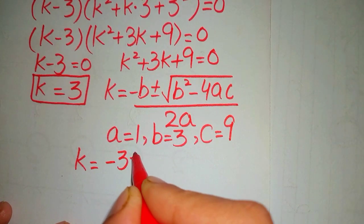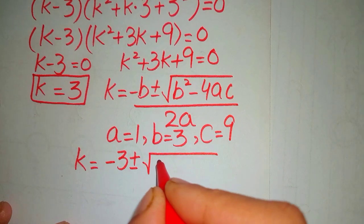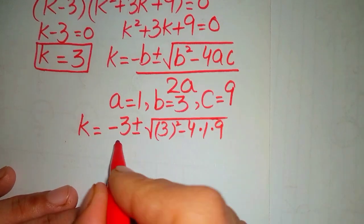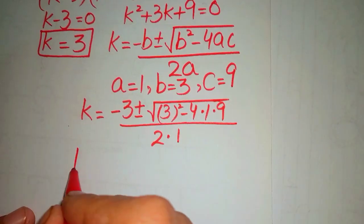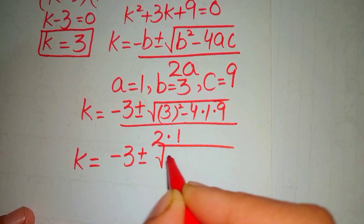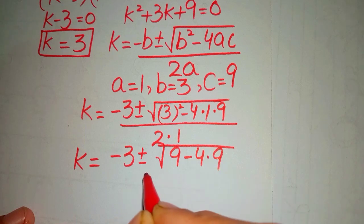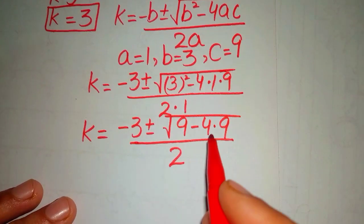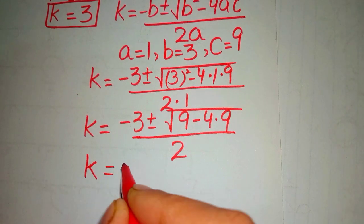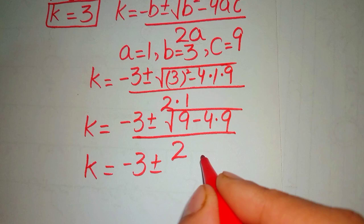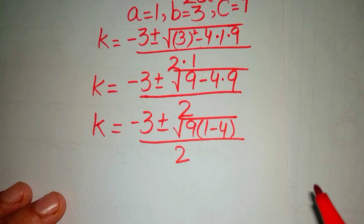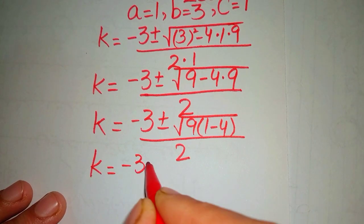Substituting into the quadratic formula gives us: minus 3 plus or minus square root of 3 squared minus 4 times 1 times 9, over 2 times 1. This becomes minus 3 plus or minus square root of 9 minus 36, over 2. Since 9 is common inside the square root, we factor it as square root of 9 times quantity 1 minus 4, over 2.